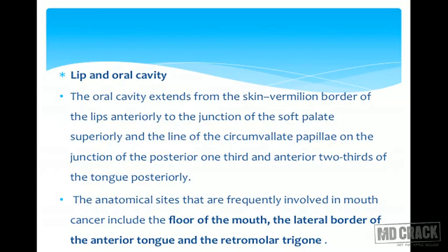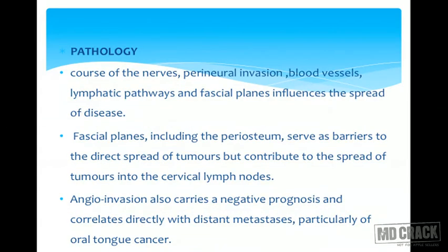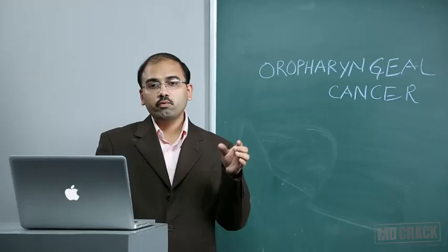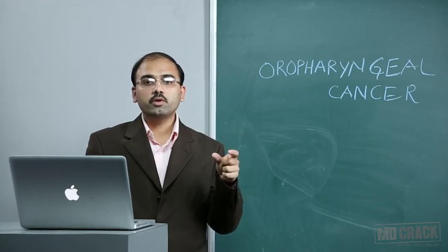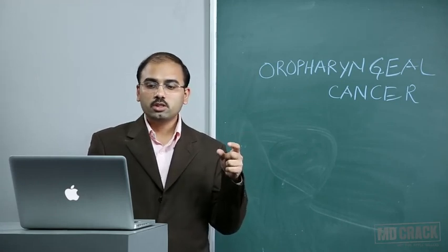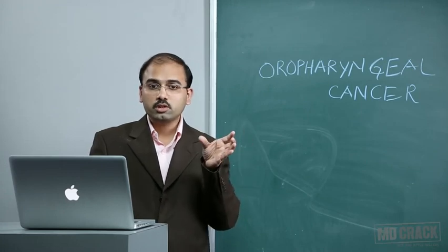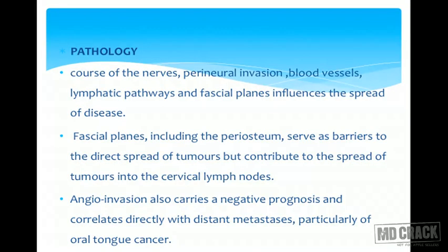The retromolar trigone is the area posterior to the last molar teeth. Regarding pathology, the course of nerves, perineural invasion, blood vessels, lymphatic planes, and fascial planes influence the spread of the disease. Perineural invasion alongside the nerve, blood vessels, lymphatic pathways, and fascial planes are very important structures which influence the spread of the tumor.